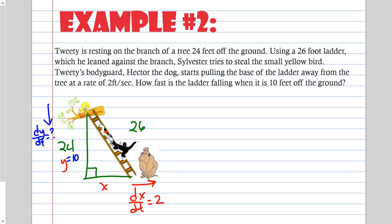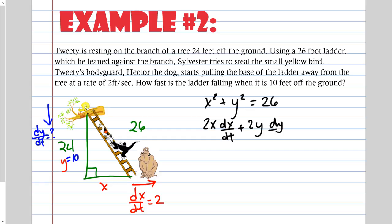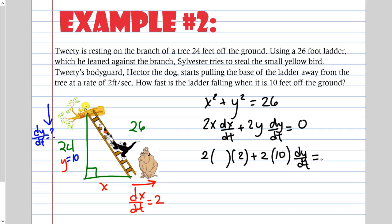Using the Pythagorean Theorem: x squared plus y squared equals 26 squared. Since 26 is a constant, when derived the right side becomes 0. Deriving: 2x(dx/dt) plus 2y(dy/dt) equals 0. We don't have X given directly, so we need to find it. dx/dt is 2, y is 10, and dy/dt is what we're solving for.